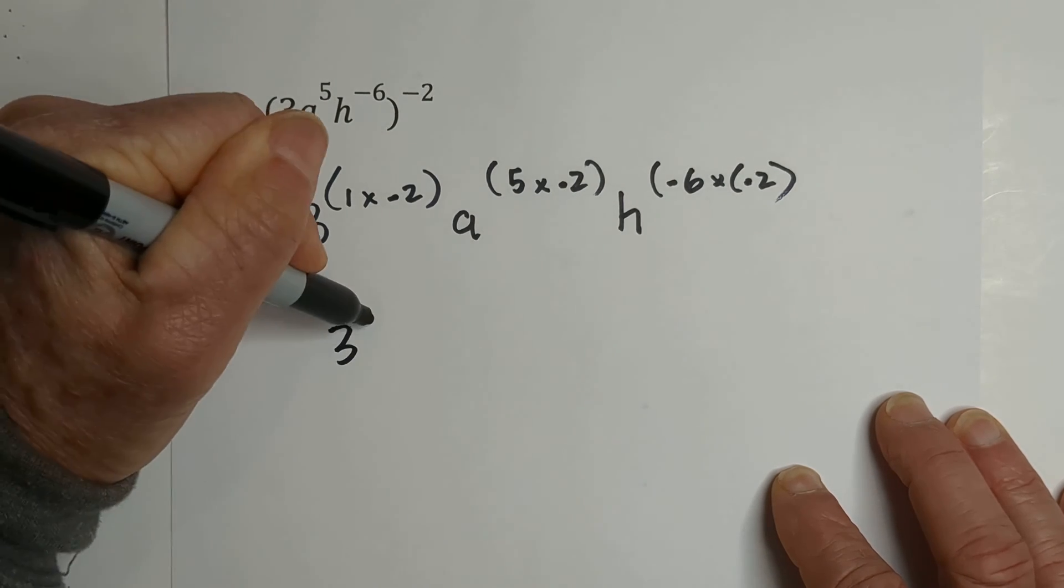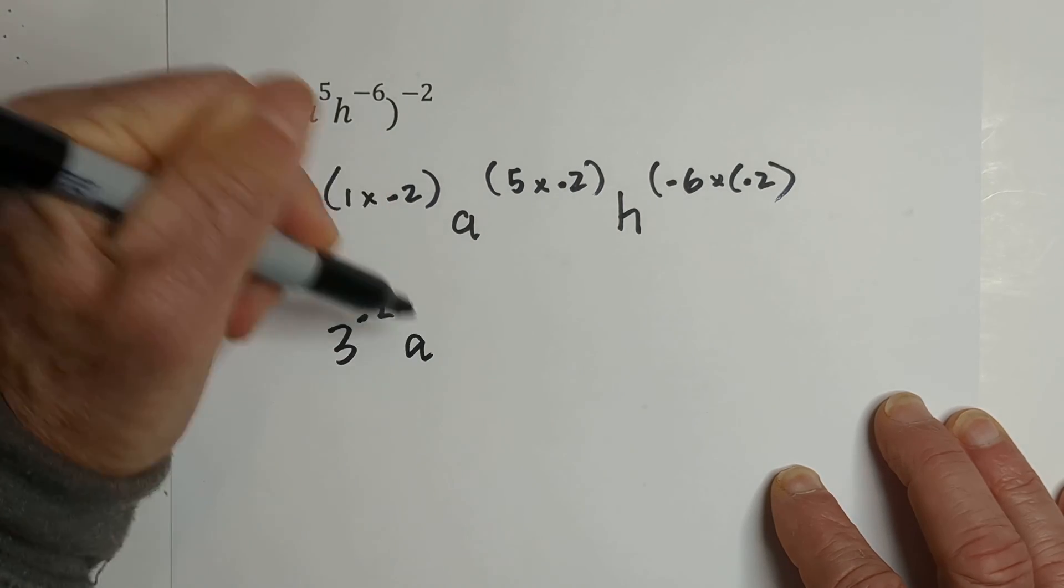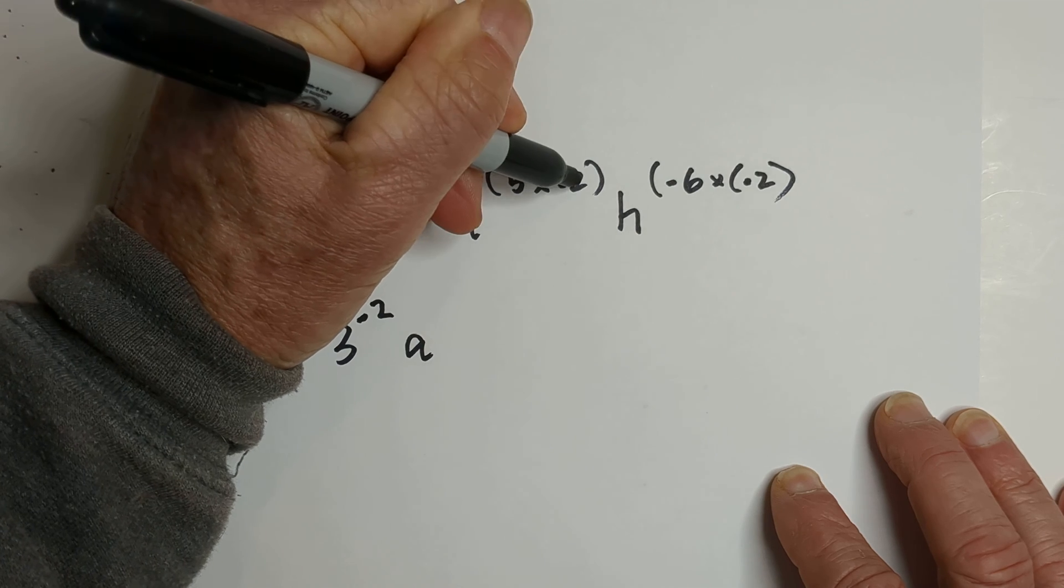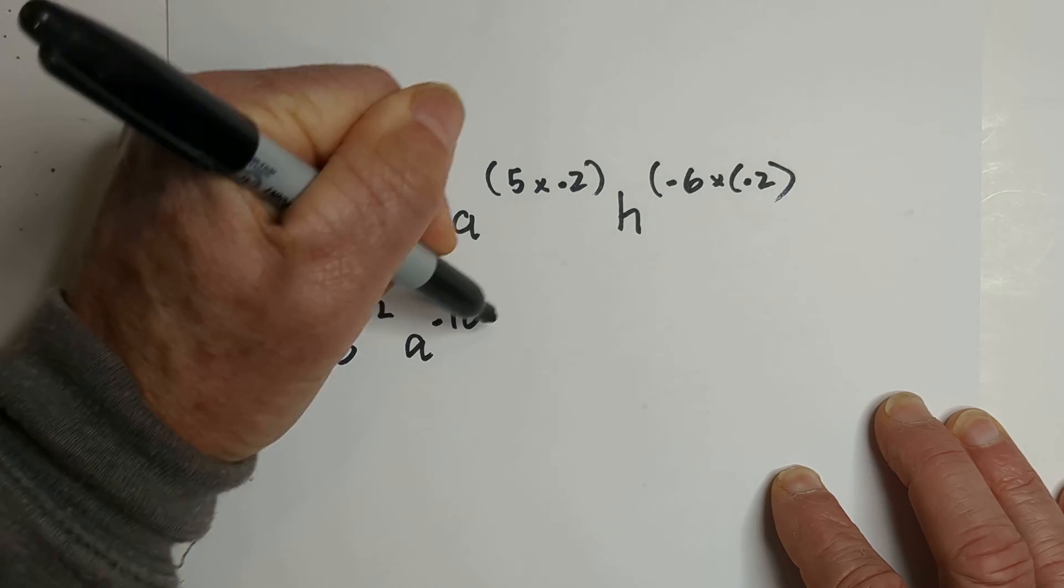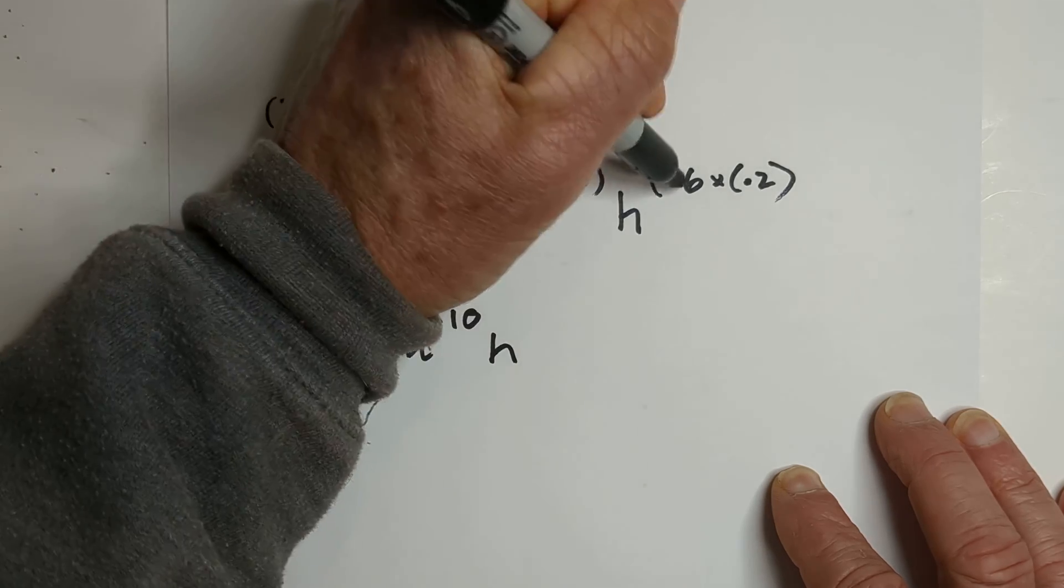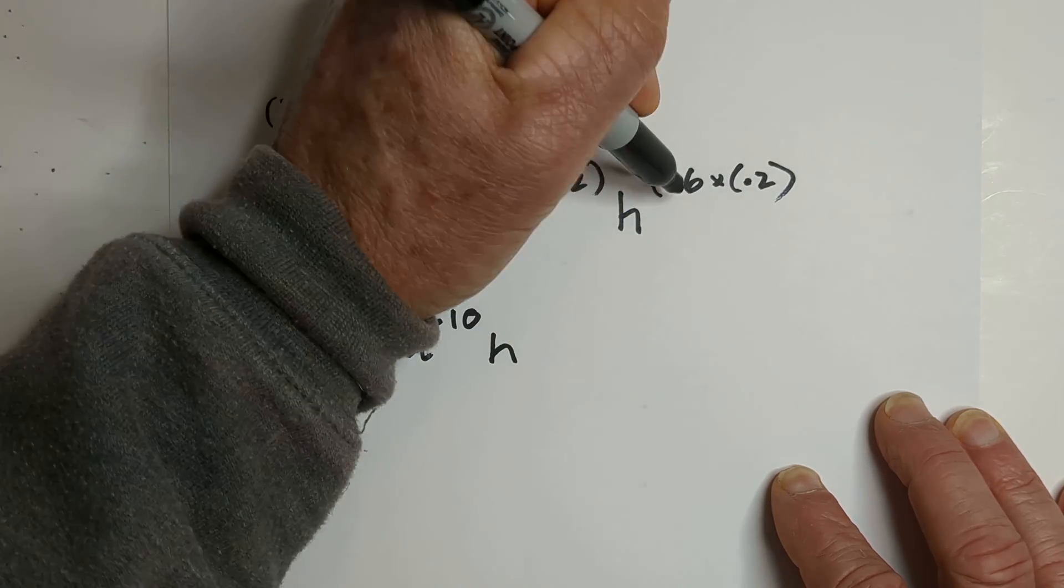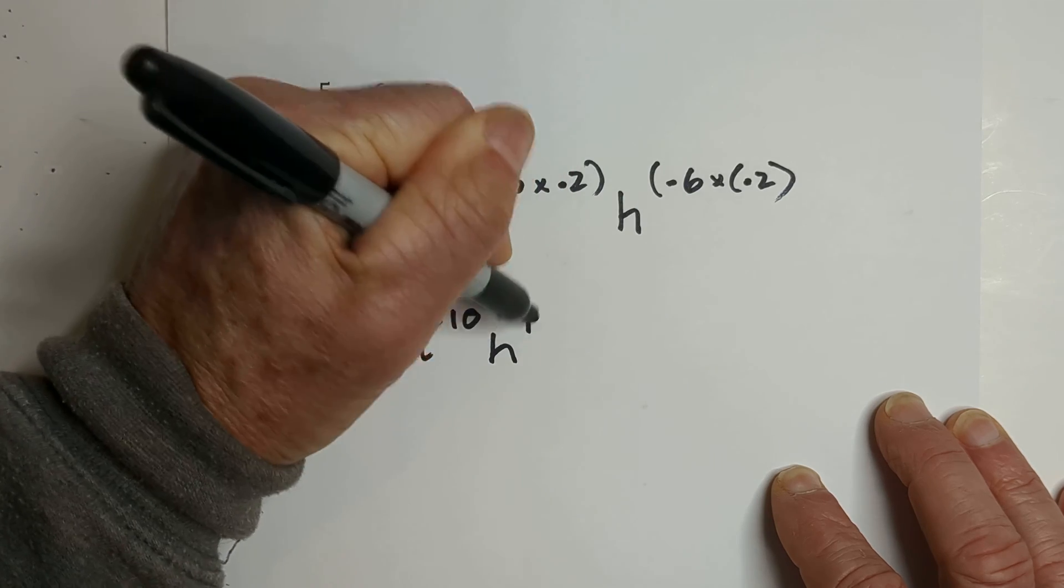So now we have 3 to the negative 2, A, 5 times negative 2. Remember, a positive and a negative is a negative, so that would be negative 10. And then the H, we have a negative and a negative. That's going to be positive, and 6 times 2 is 12.